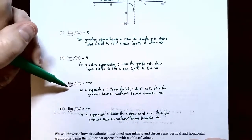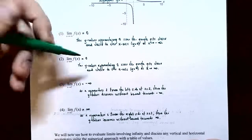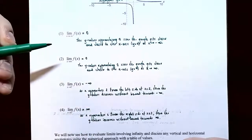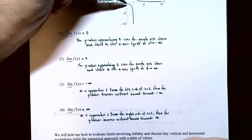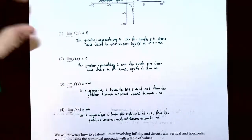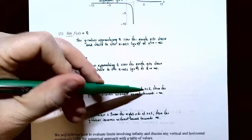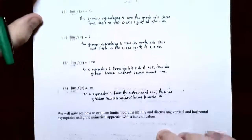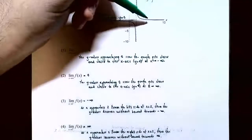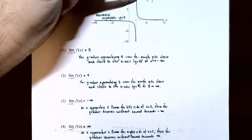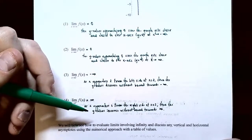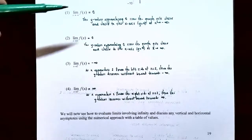For the limit as x approaches two from the left side — a one-sided limit — there appears to be a vertical asymptote at x equals two shown by a dashed line. As x gets closer to two from the left, the y values grow arbitrarily more negative, approaching negative infinity. For the limit as x approaches two from the right side, the graph grows arbitrarily large, so the y values increase without bound toward positive infinity.